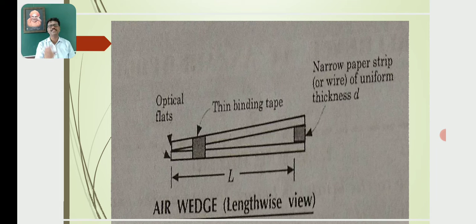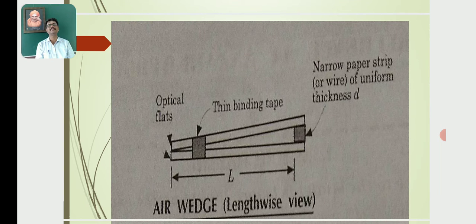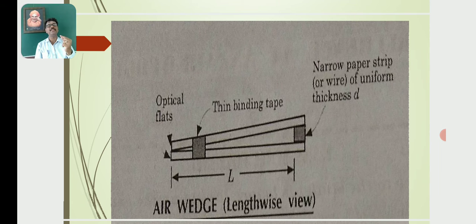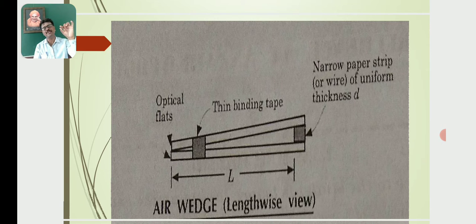As seen in the diagram, there are two optically flat glass plates. Both are bound with a rubber band at one of their ends. Then a thin wire or a thin paper of uniform thickness D is placed between the two surfaces of the flat glass plates.